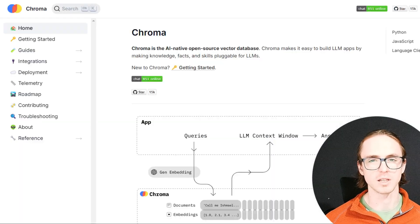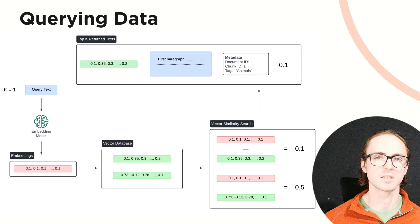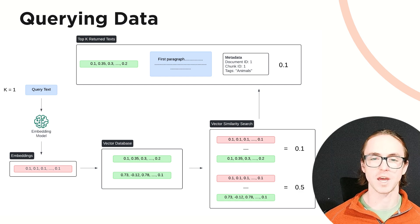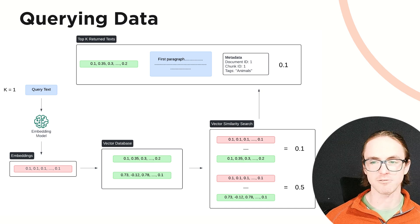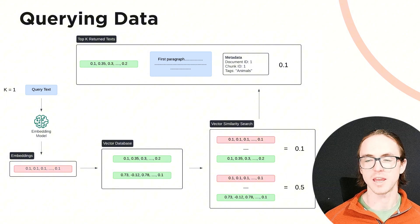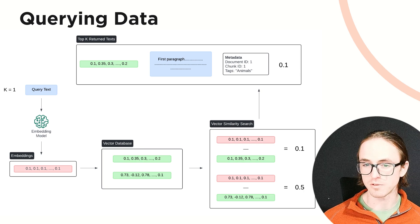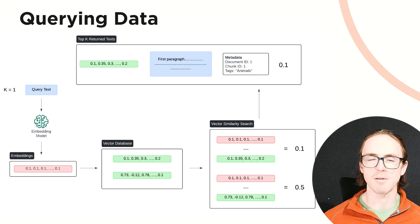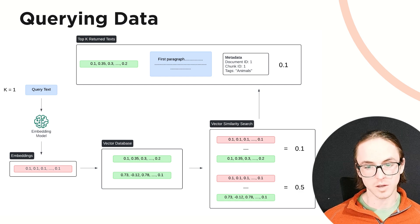How does querying work in more detail? You take your query text — the question the user asked your chatbot or the text you're searching for — and put it through an embedding model to generate a new vector representative of that query. You then compare that new vector against the vector database and get a similarity score for each stored vector. The lower the similarity score, the closer those two vectors are and the more similar the texts are in meaning. You can then rank the results — in this example there are only two vectors in the database — and return the top results you've asked for, in this case the single most similar text chunk.